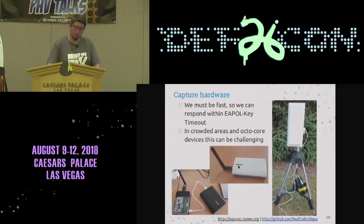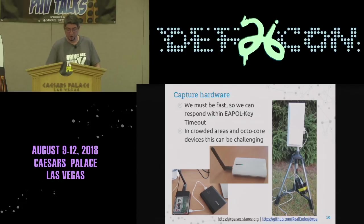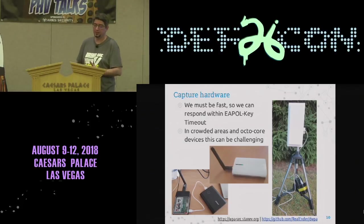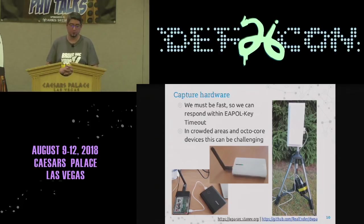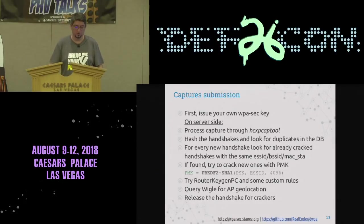Here you see an OpenWRT-based device with a hardware antenna mode powered by a link battery — very cheap. And here is again a Raspberry Pi-based solution but with a much better antenna that gives a lot more range and power. You can use whatever hardware you want for this.